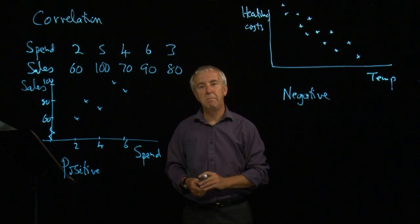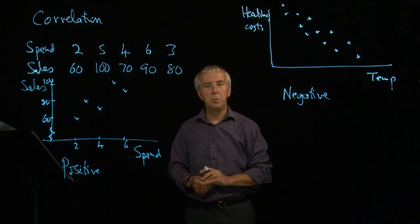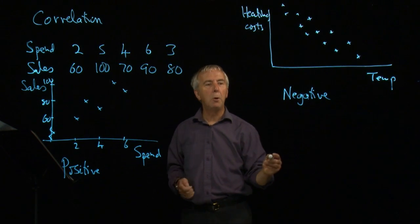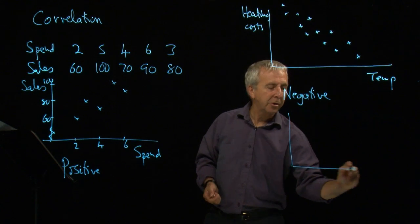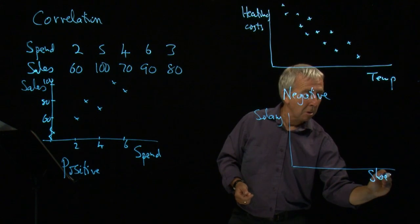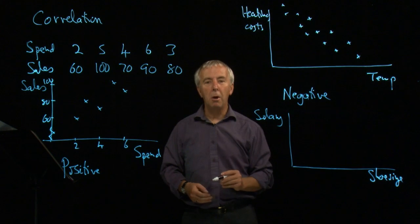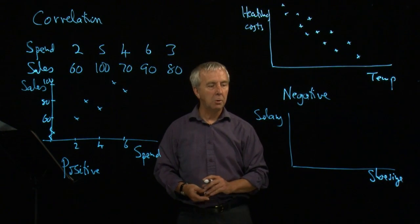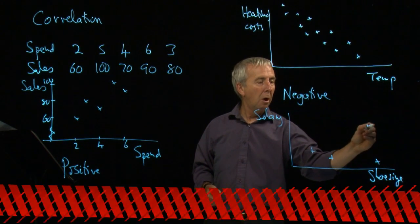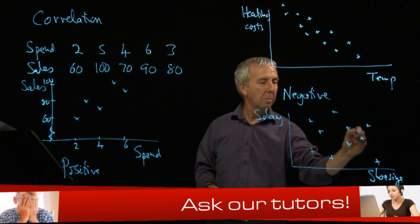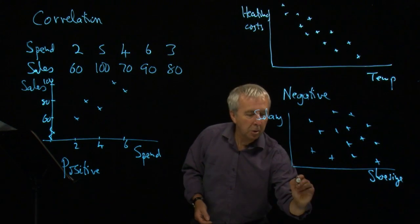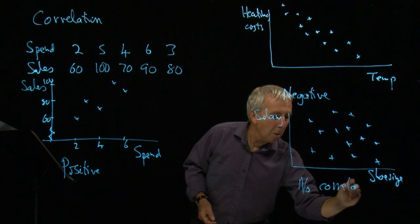It's quite possible to get no correlation. If you think of two variables which really seem to have very little to do with each other, you'd probably get just a blob of points. For example, if we plotted someone's salary against their shoe size, it's pretty unlikely that, in a big population, shoe size would have any major effect on salary. You'd get people with big shoe sizes earning low or high salaries, and vice versa — just a scattered blob. We would say those are not correlated: zero correlation.